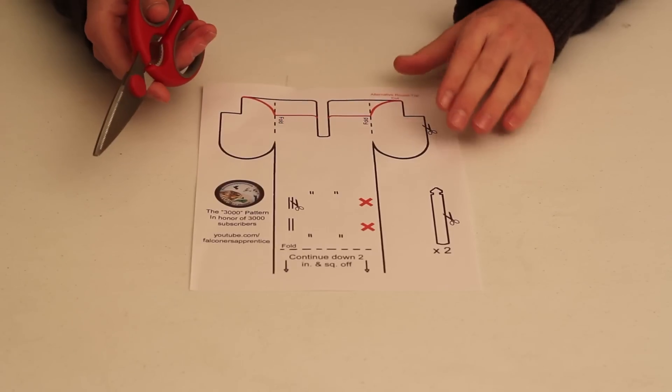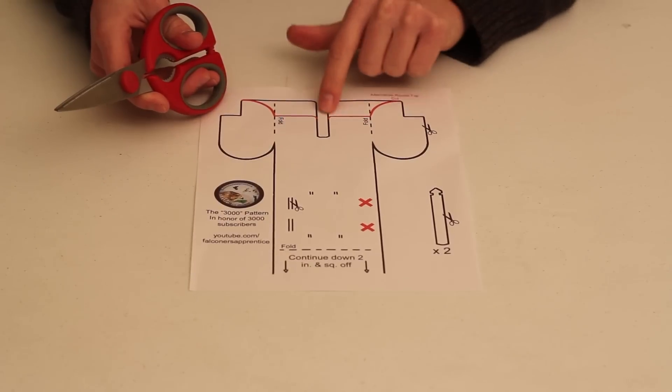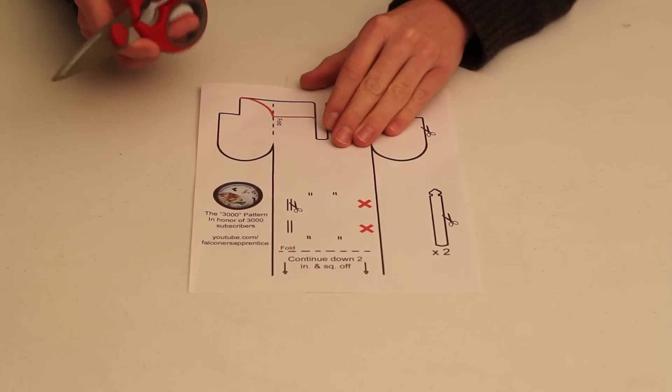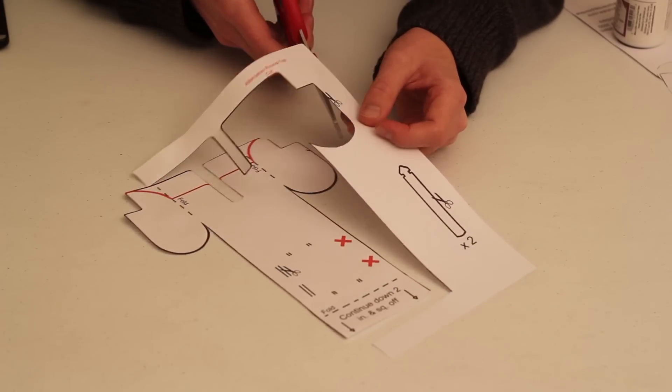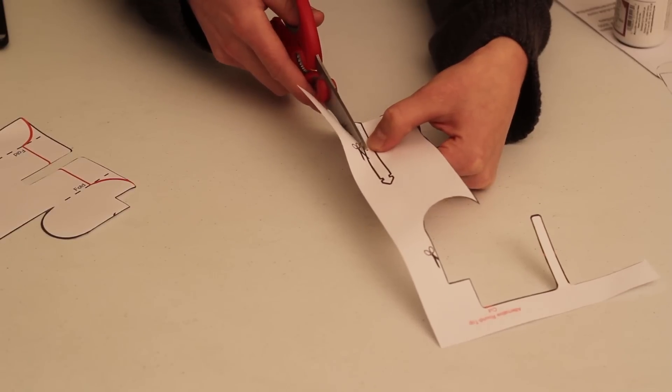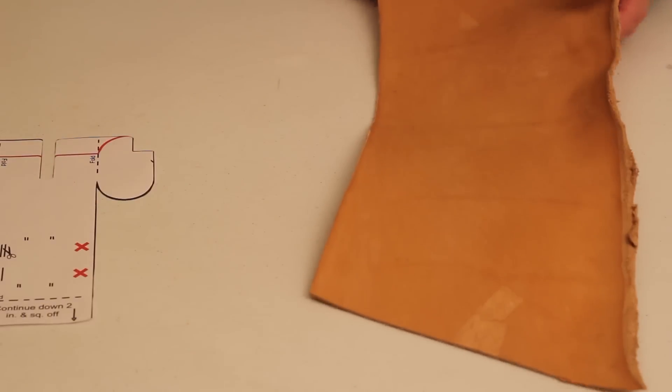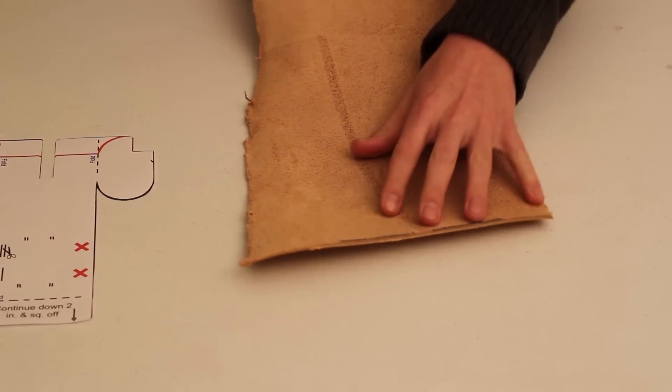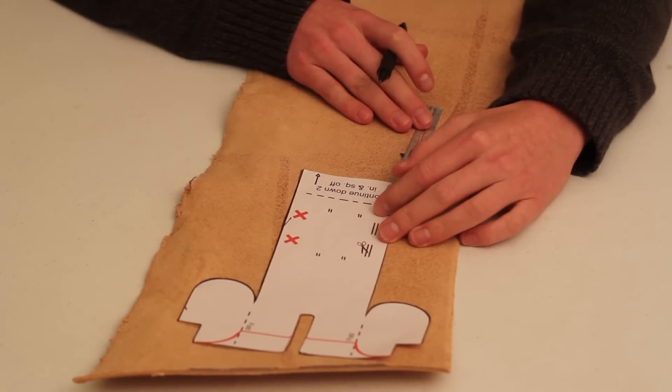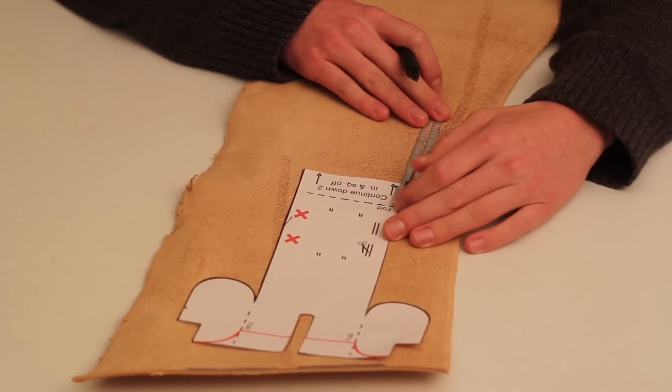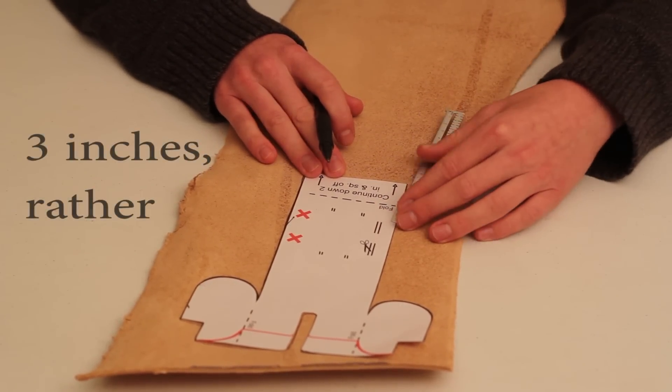The first thing to do is to cut the pattern out. As you can see, I've created this pattern so that you can choose between a round top or a square top. I'm going to be using the square top. Alright, so the next thing you're going to do is trace your pattern on the backside of your leather. As you can see here at the end, there's not enough paper room on a standard piece of printing paper. So I marked it just to continue down 2 inches and then you'll just square it off.